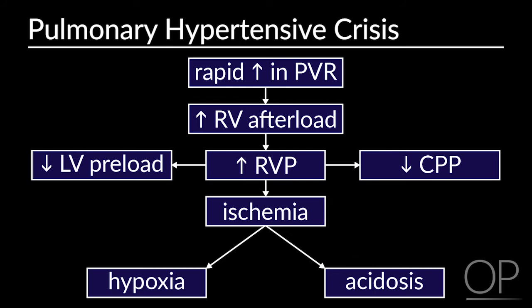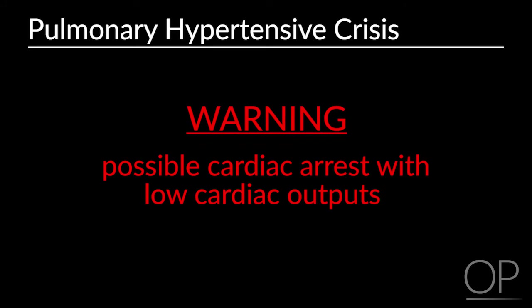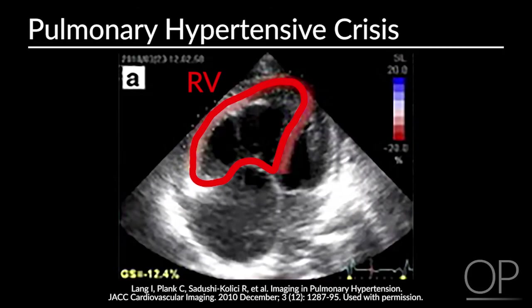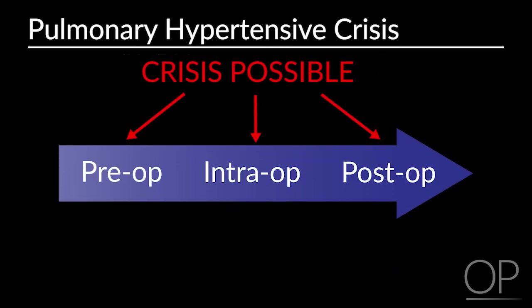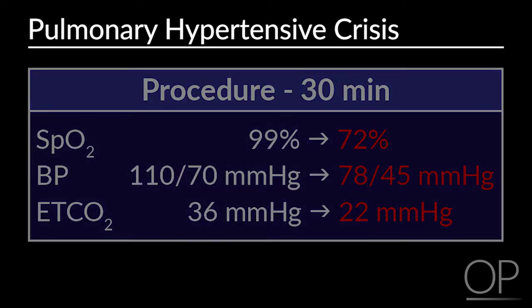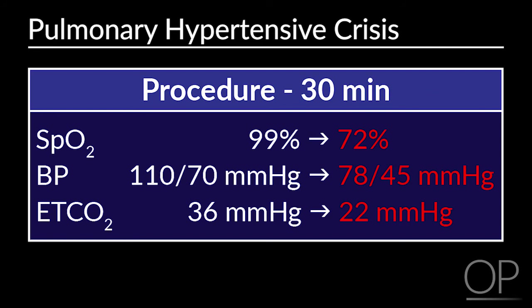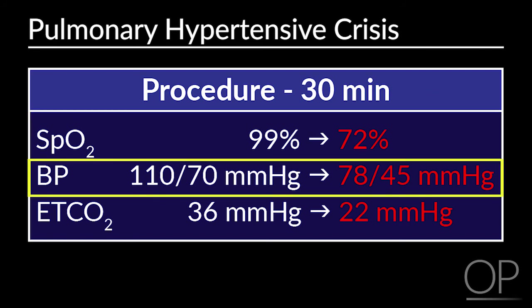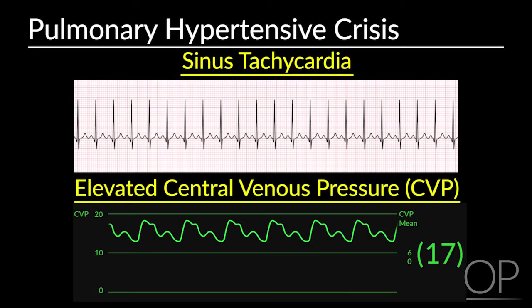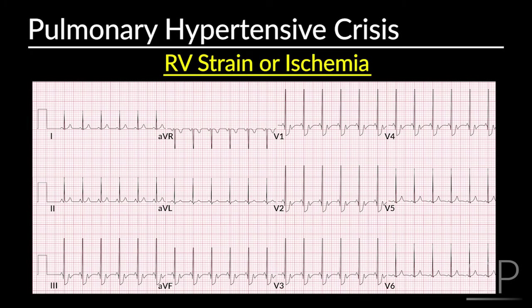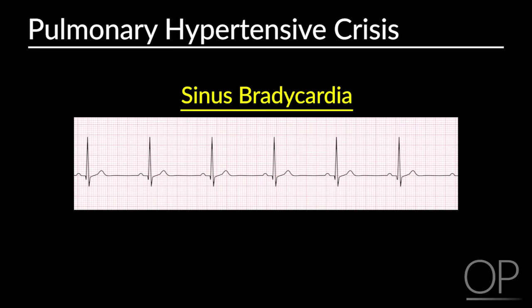During an acute event, it is possible to have cardiac arrest with low cardiac output. If the patient develops cardiac arrest, resuscitation may be difficult — CPR may be ineffective due to an enlarged right ventricle compressing the left ventricle. Pulmonary hypertensive crisis can happen at any time during the perioperative period, even hours after the intraoperative time. Intraoperative findings include sudden desaturation, systemic hypotension, decreases in end-tidal CO2, sinus tachycardia, elevated central venous pressure, new-onset EKG changes of RV strain or ischemia, and bradycardia — an ominous sign of impending cardiac arrest.